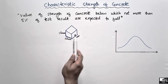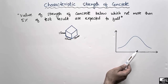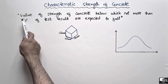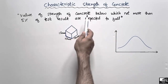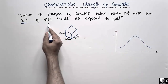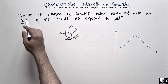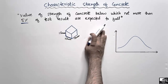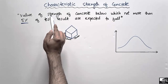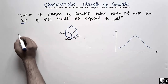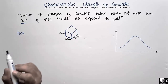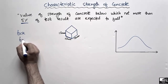So what is the definition of the characteristic strength of concrete? It defines that it is the value of the strength of concrete below which not more than five percent of results are expected to fall. The characteristic strength is represented by FCK, and it is used to define the design strength of the concrete.